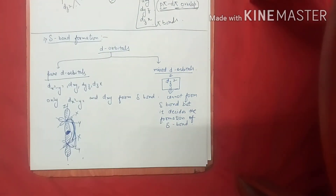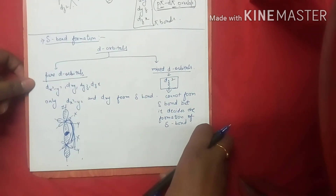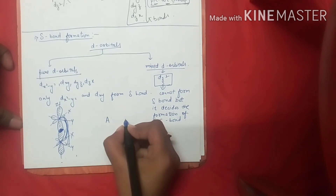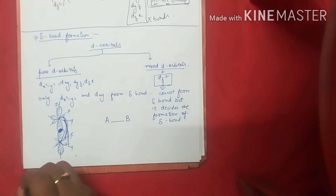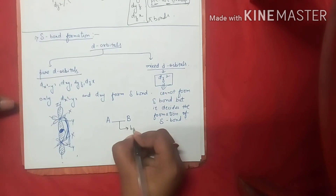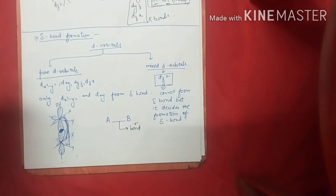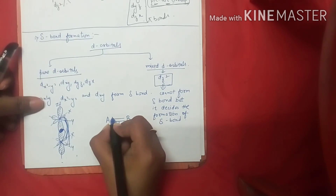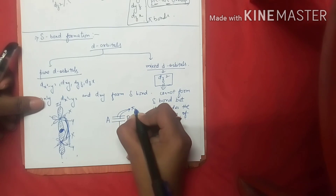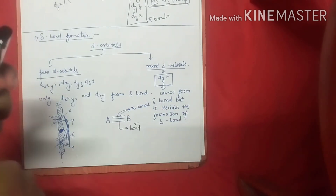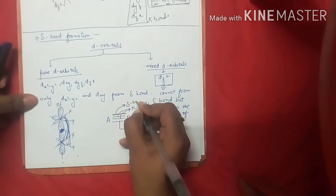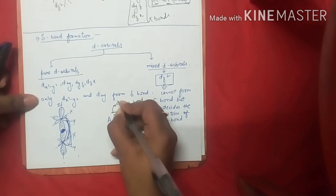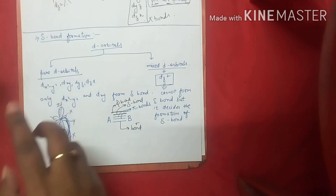This is how your Delta bond is formed. A very basic but important concept: suppose there are two atoms A and B. The first bond formed is called your Sigma bond. The second and third bonds are called your Pi bonds. The fourth bond is your Delta bond, and the fifth bond is your Phi bond.